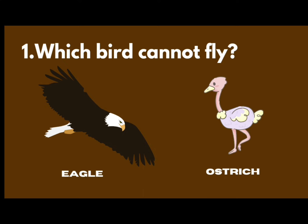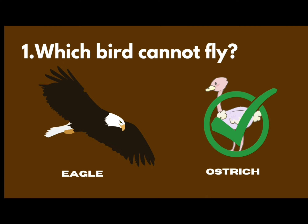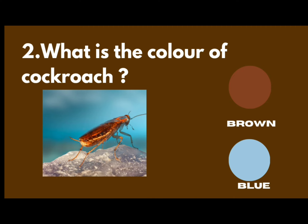What's the name of that bird? Ostrich — it is very heavy. So what is the color of cockroach — brown or blue? Brown. Yes, you are also correct.